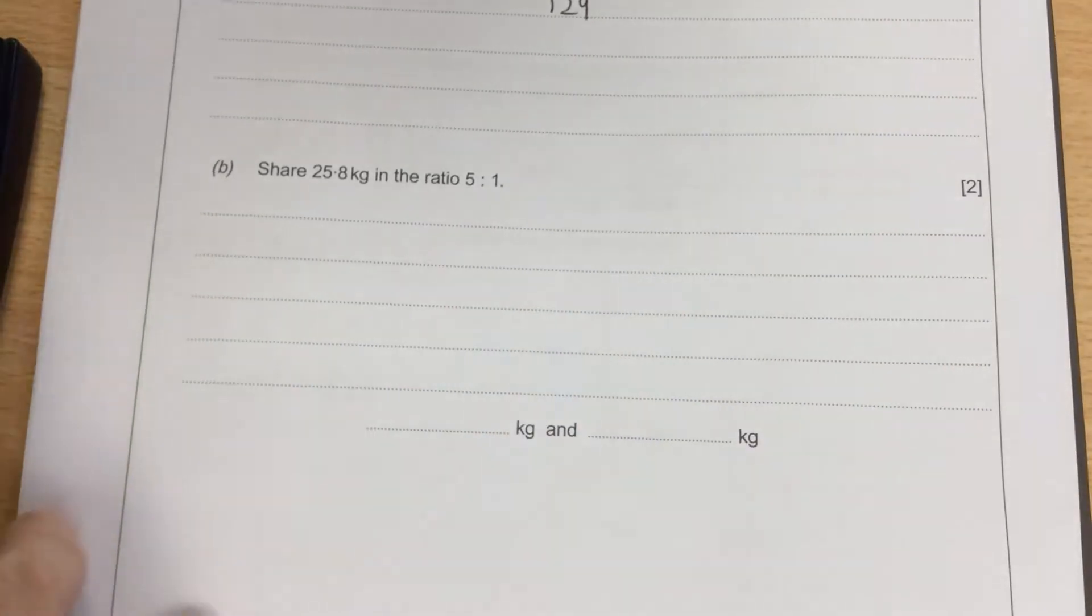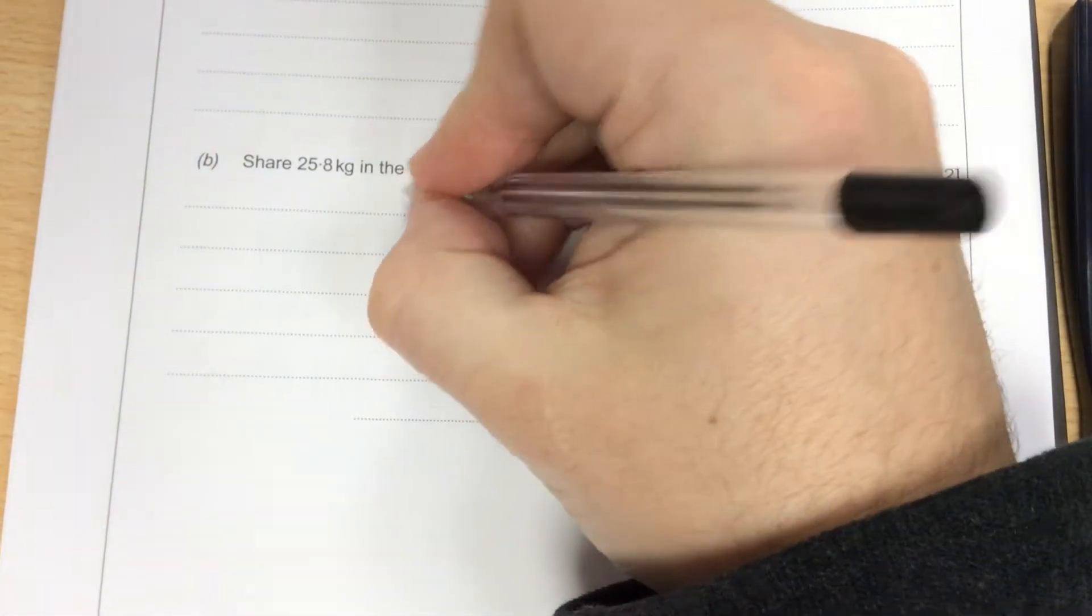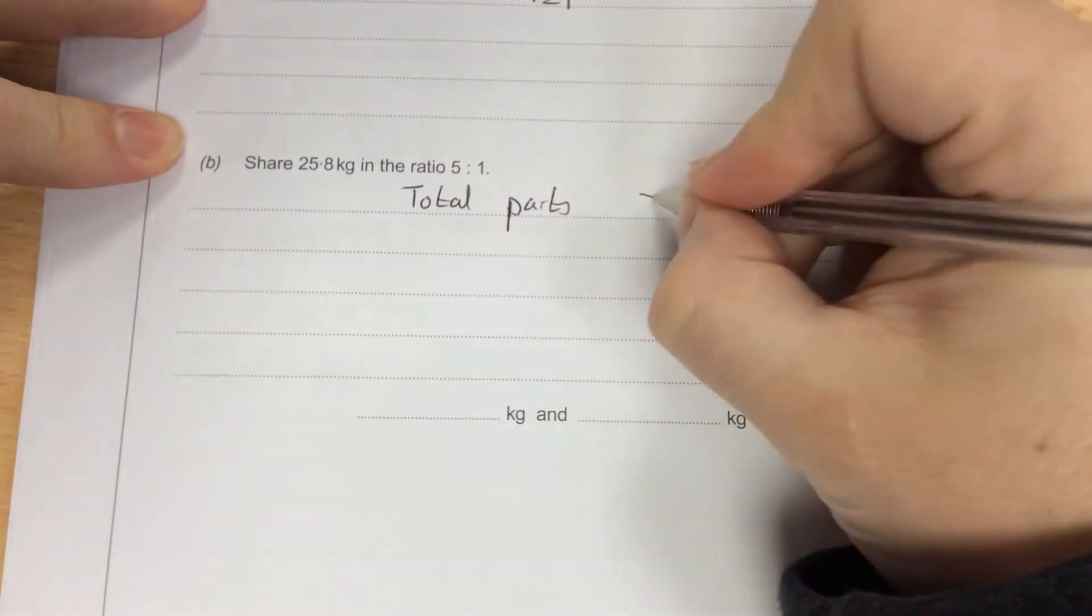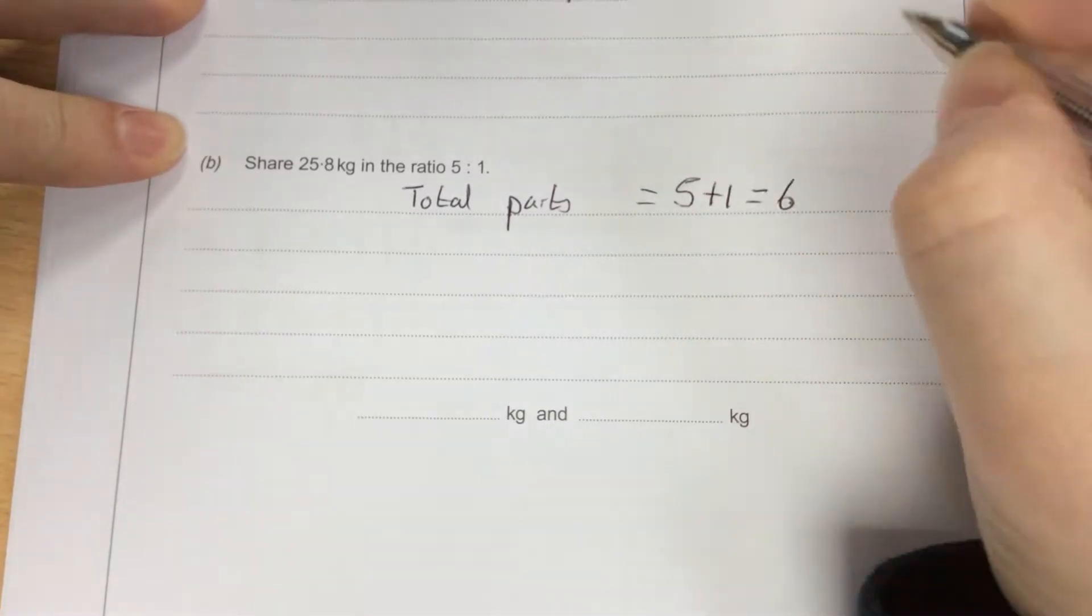share 25.8 in the ratio of 5 to 1. So the total parts here is going to be 5 add 1 equals 6.